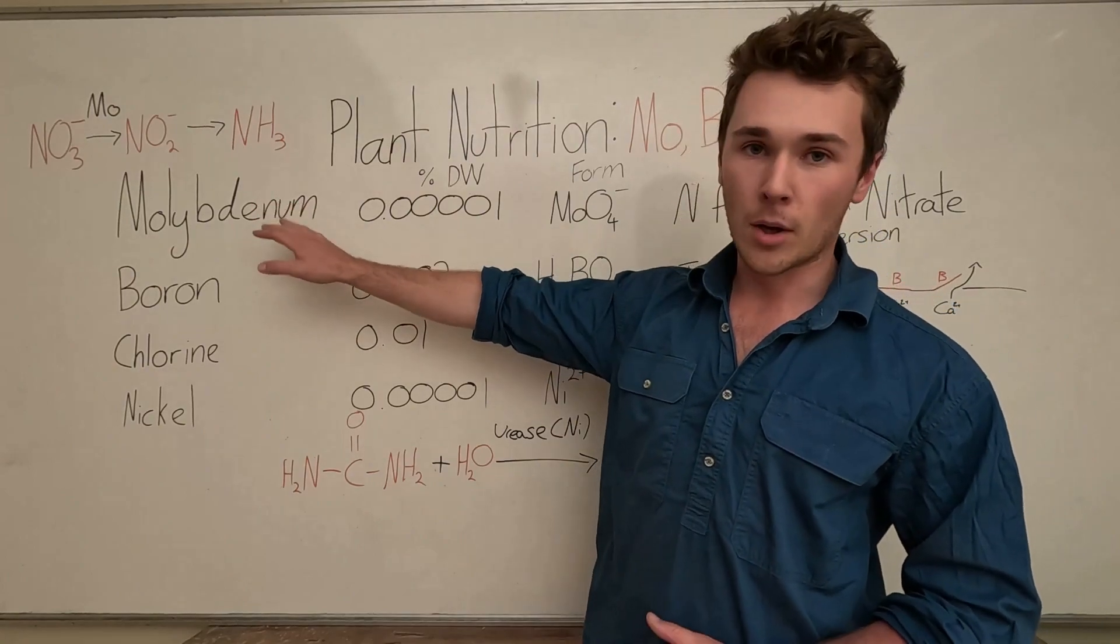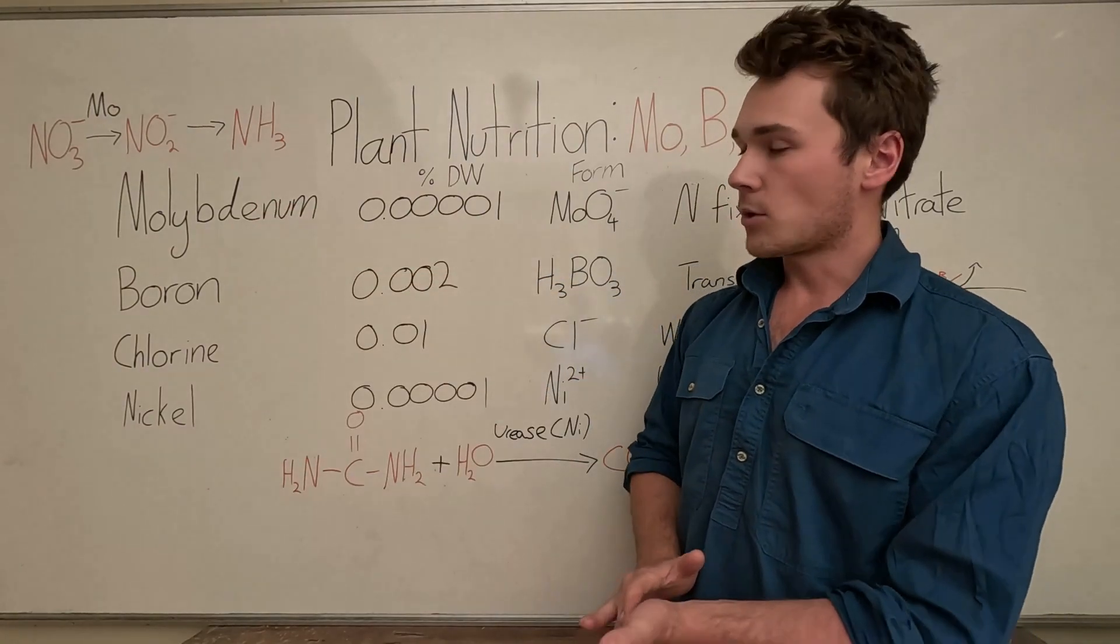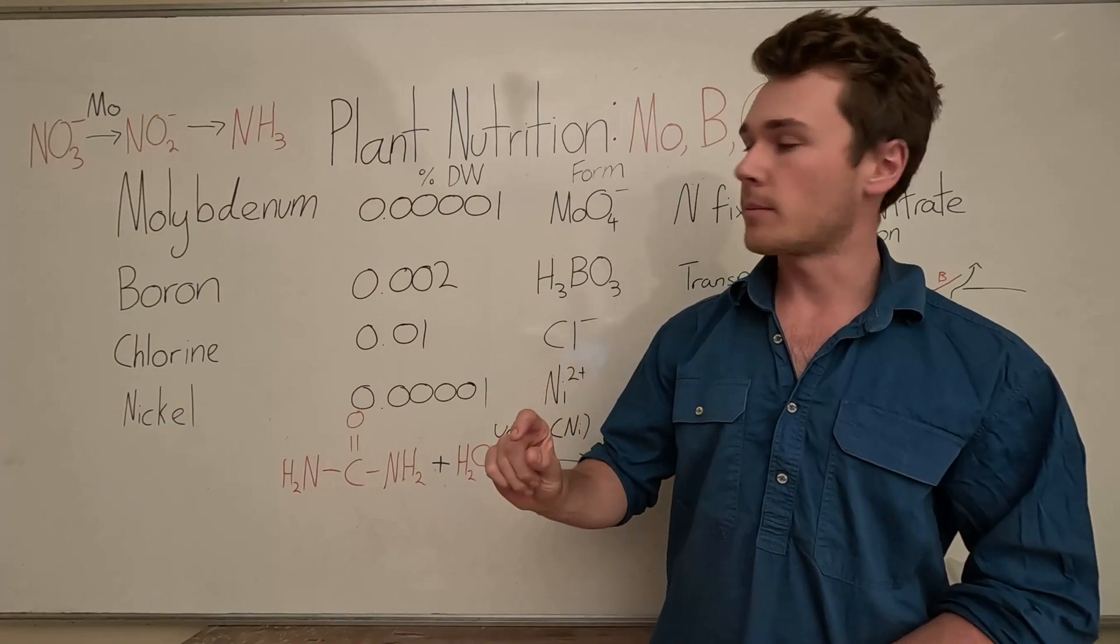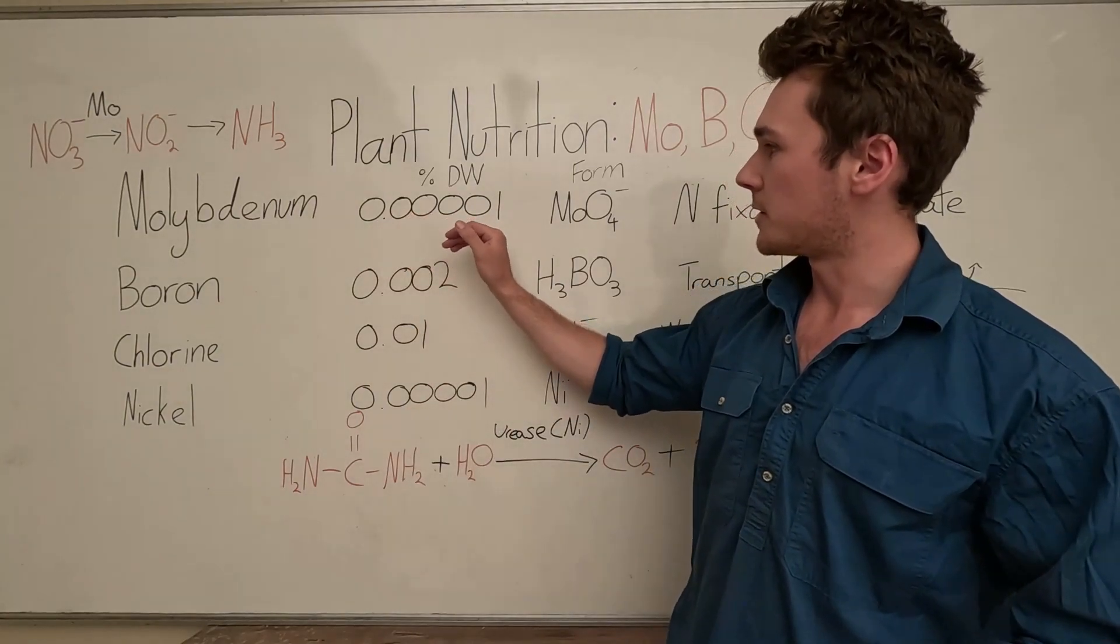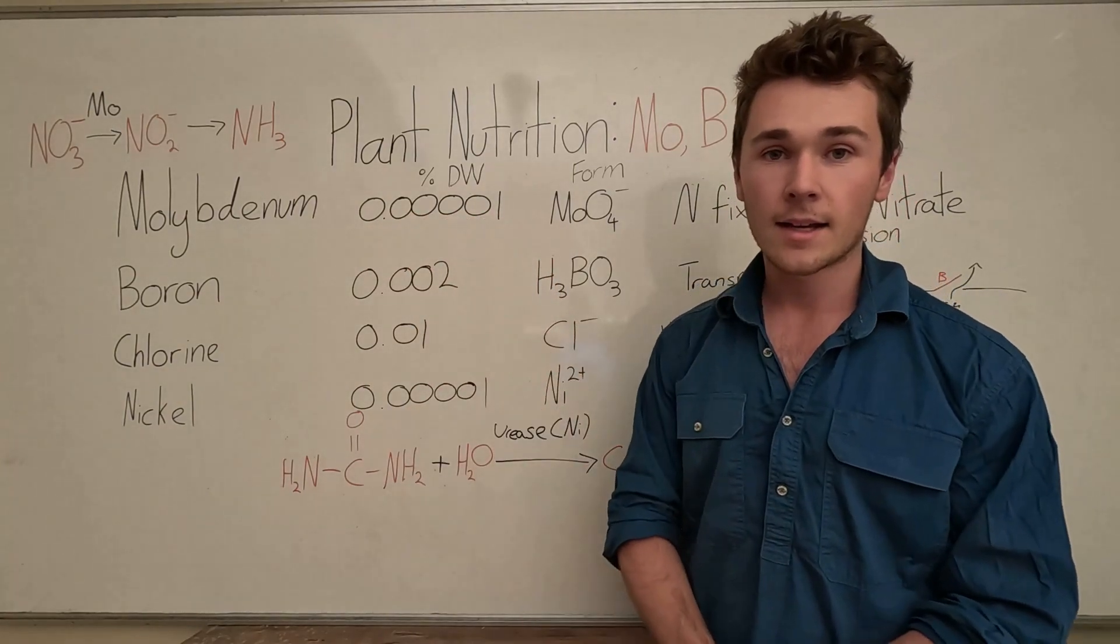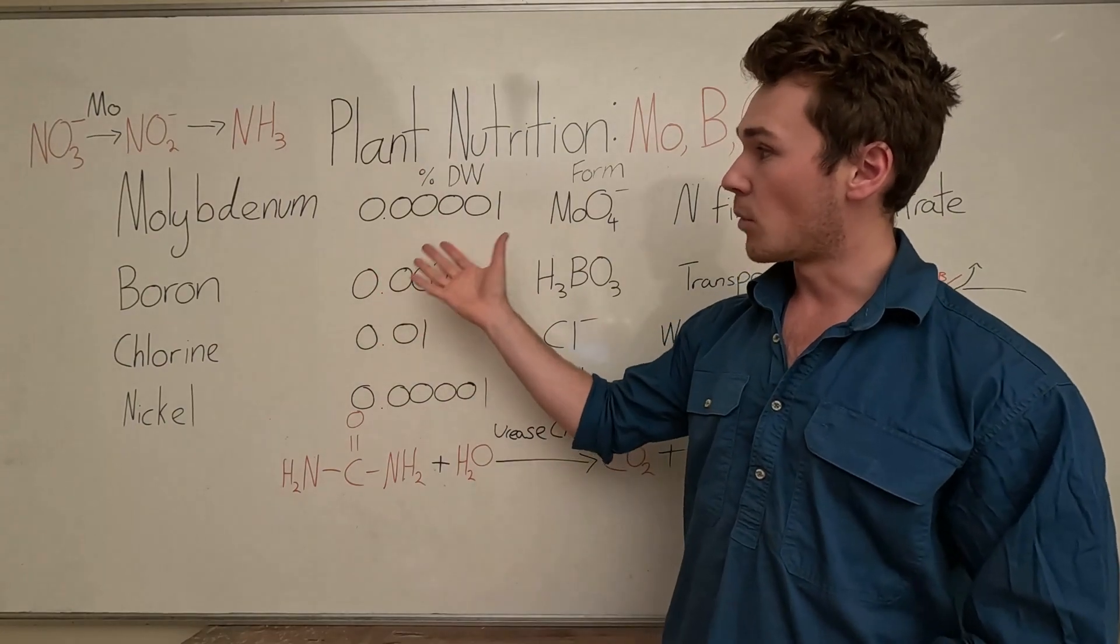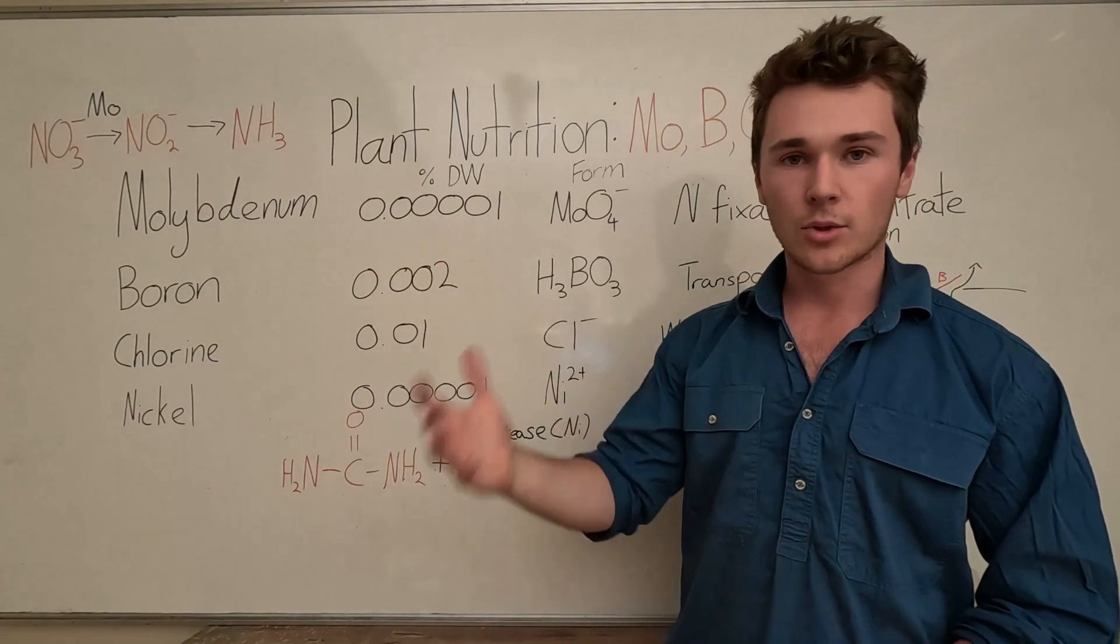Let's get into it. The first one we have is molybdenum, or moly for short. It is used in a very, very small amount: 0.00001 percent of the dry matter. This is the smallest nutrient or the smallest amount of nutrient used out of all our essential nutrients.